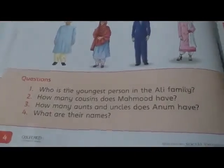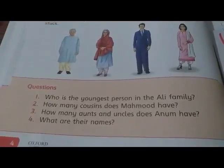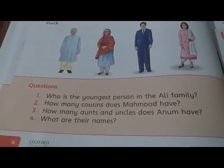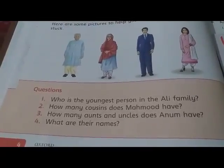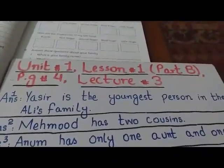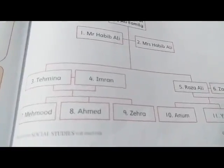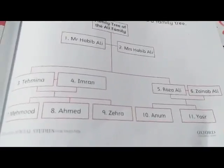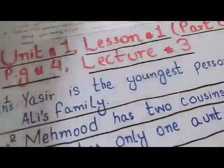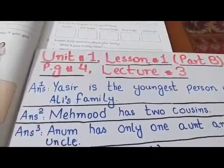Second question: how many cousins does Mehmood have? Mehmood کے کتنے cousins ہوتے ہیں؟ Answer number two: Mehmood has two cousins. Mehmood کے دو cousins تھے - Anam اور Yasir۔ یہ دونوں Mehmood اور Ahmed کے cousins تھے۔ تو Mehmood has two cousins - Anam and Yasir are Mehmood's cousins.